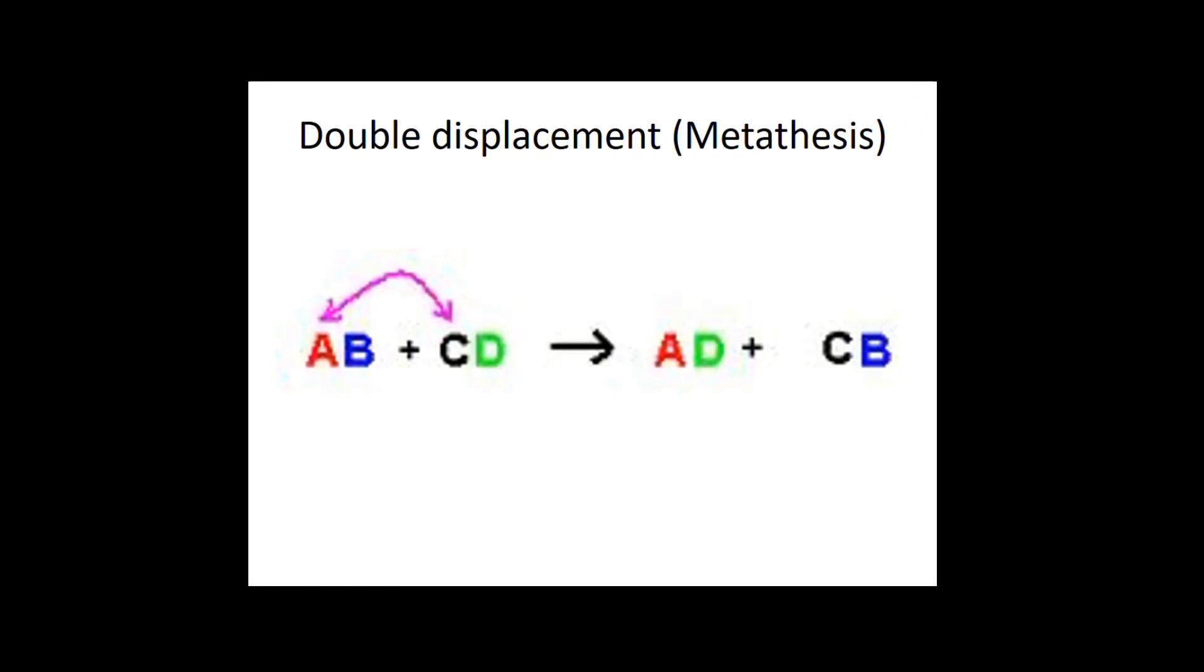Now for double displacement, also called metathesis. Double displacement is AB plus CD yielding the products AD plus CB, where both elements are replaced.